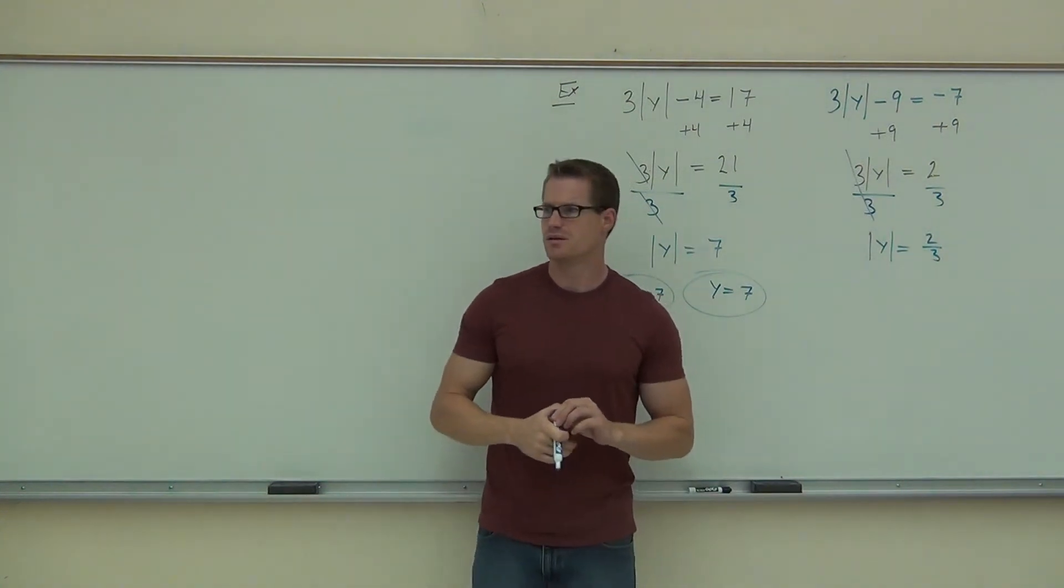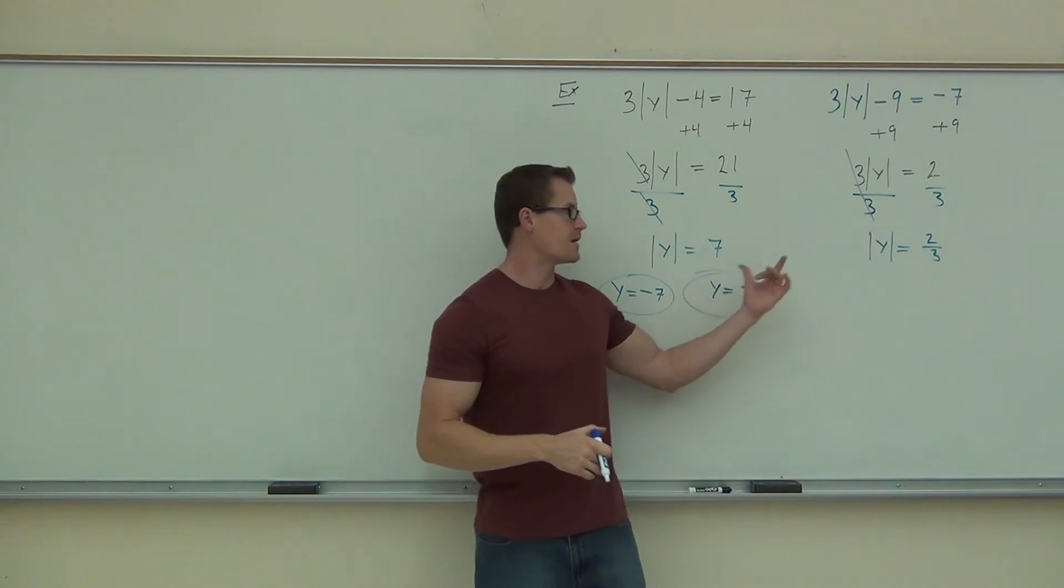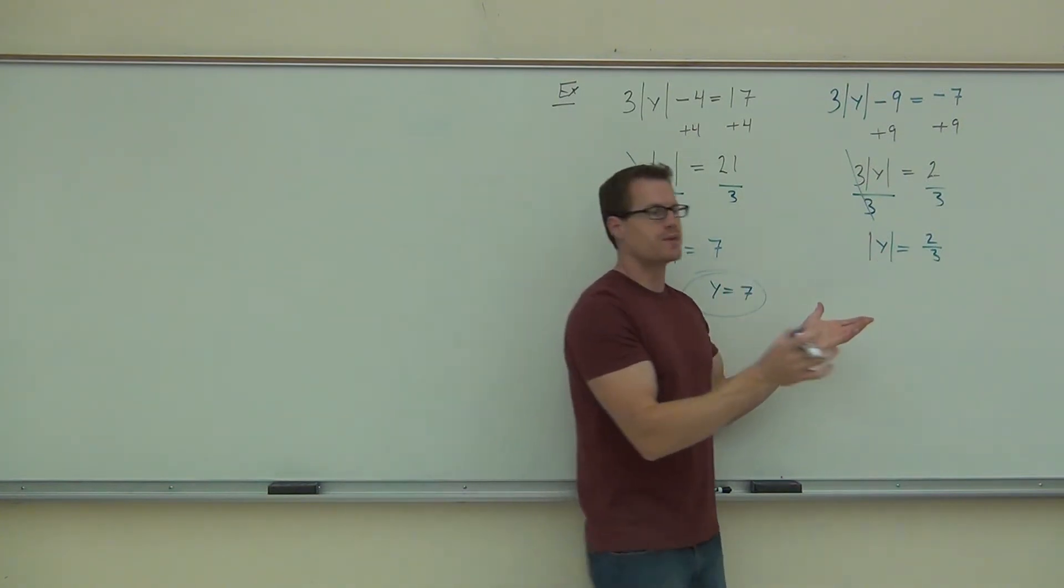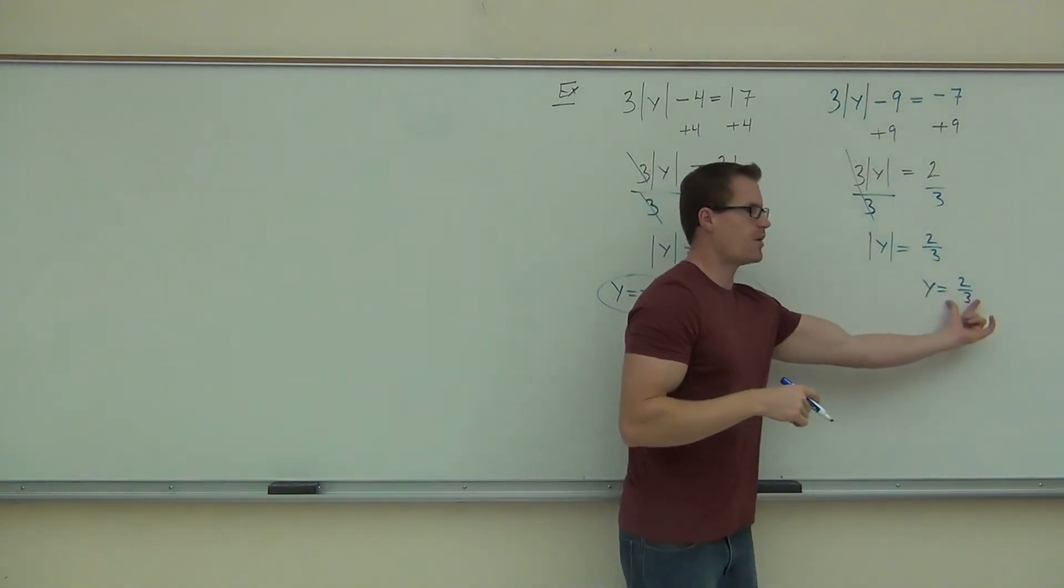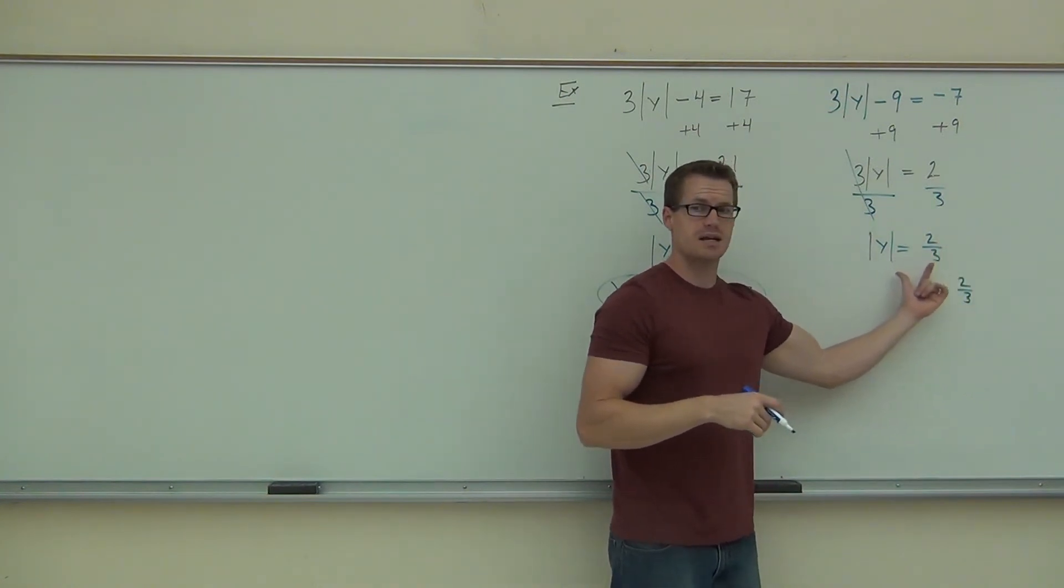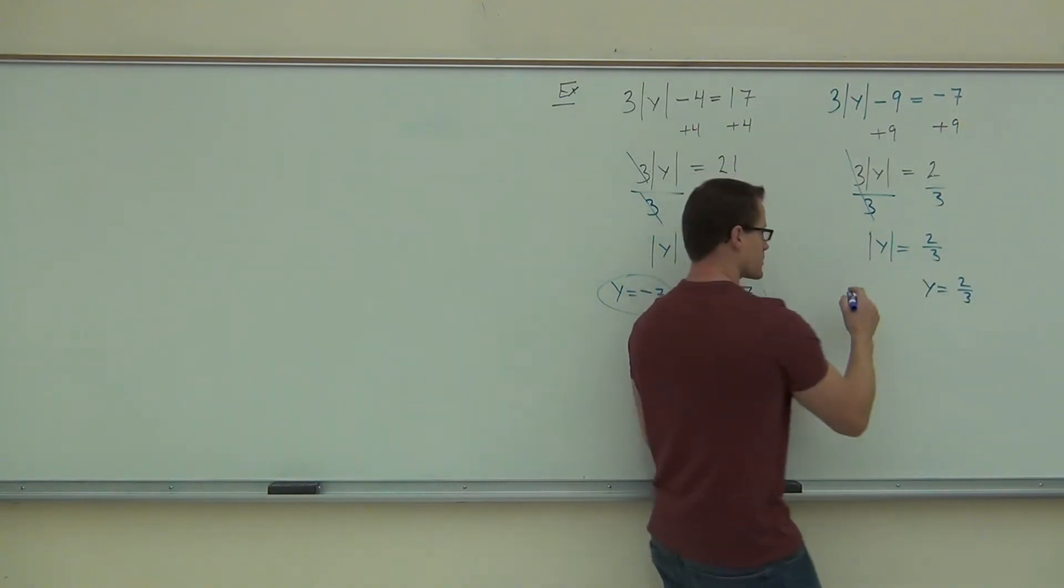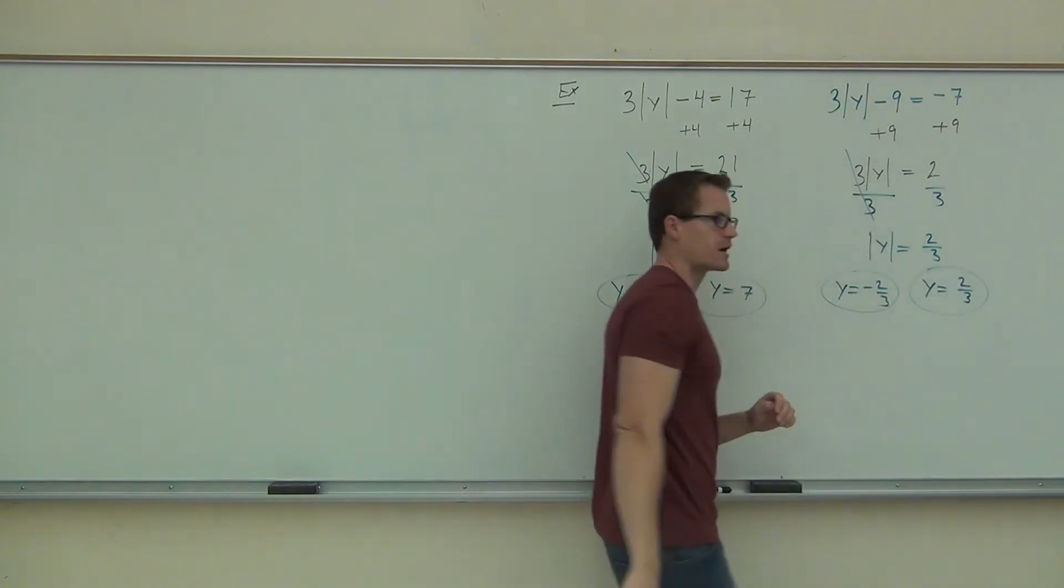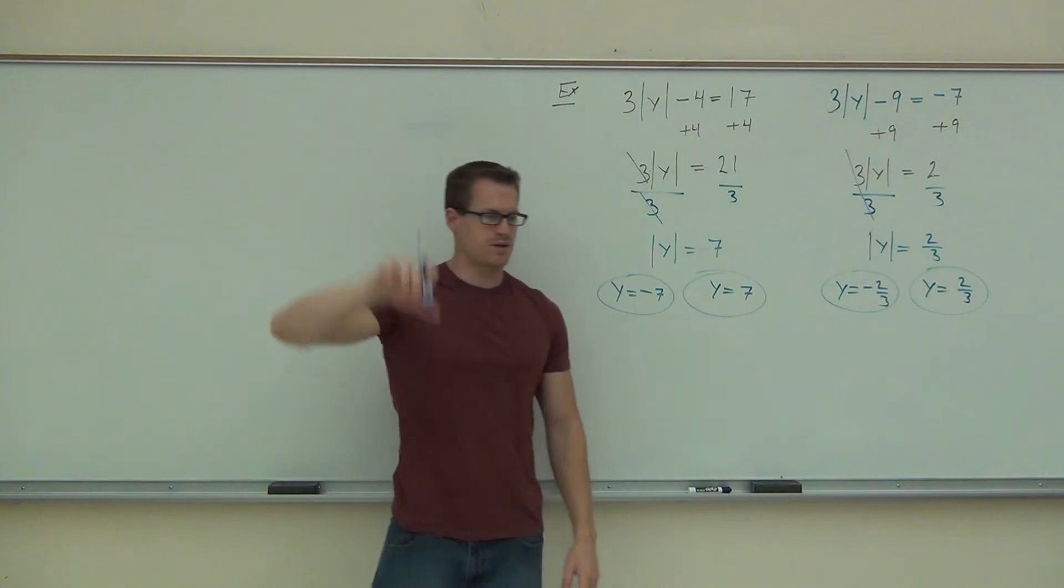Is that okay? Good, we just do the same thing we did before. Now that you have the absolute value isolated, absolute value equals a number, we say, oh, the inside can equal the number itself, because I know an absolute value will keep positive number positive. That would be one solution. But also, I need the inside equal to the negative version of that number, because absolute value will take a negative and make it positive. So, y also equals negative 2 thirds. Actually, not even a whole lot of work with those fractions. You just have to make one positive, one negative. Raise your hand if you got that. Good for you. That's fantastic.